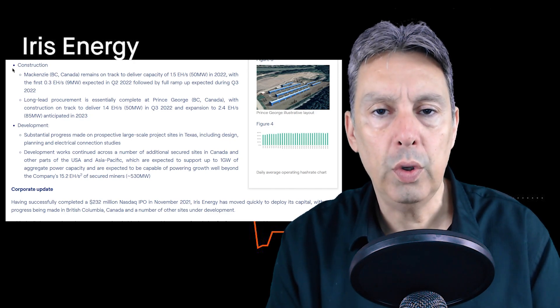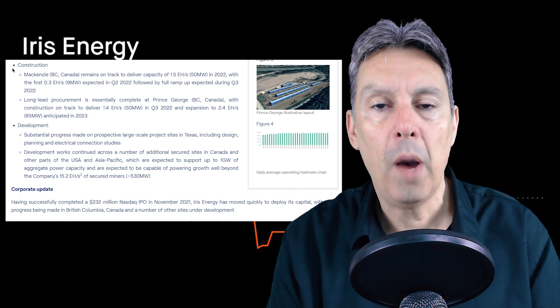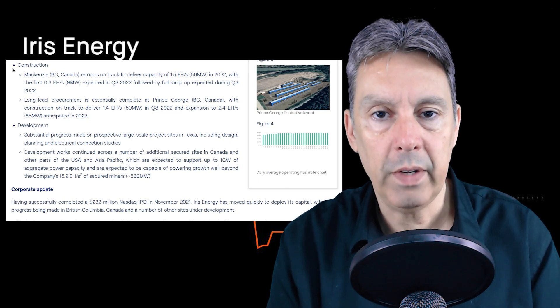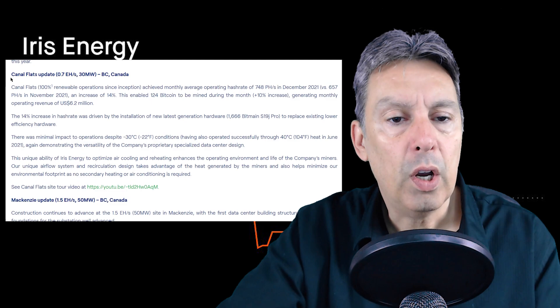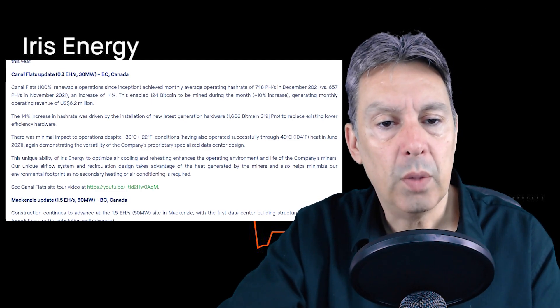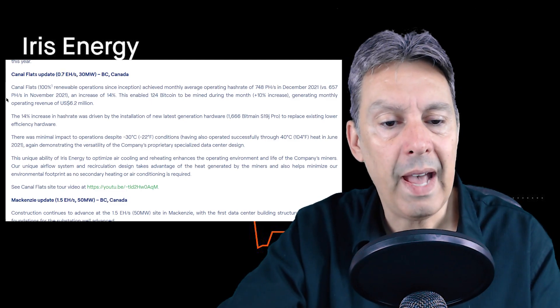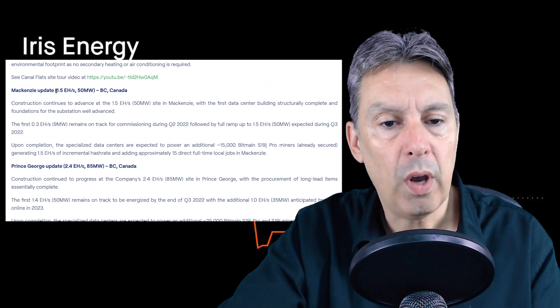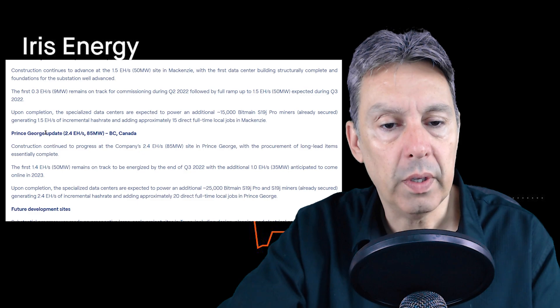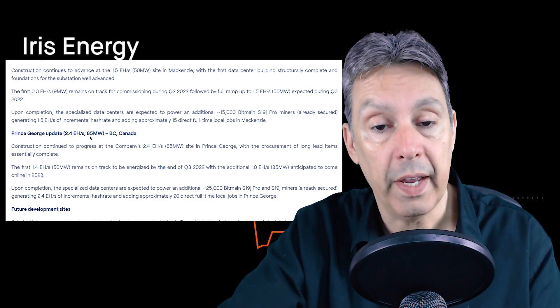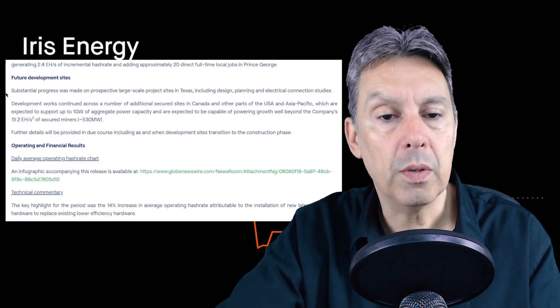Here quickly they talk about the Canal Flats update. That's the 0.7 exahash they're running right now. The McKenzie update, which we talked about, which is going to accommodate 1.5 exahash. And the Prince George facility, which is going to accommodate 2.4 exahash per second.